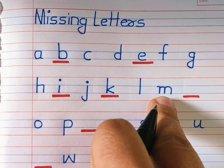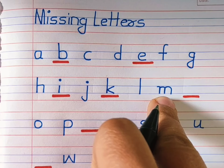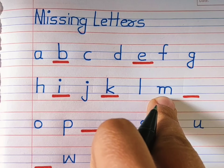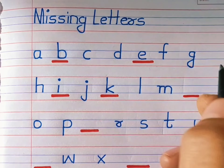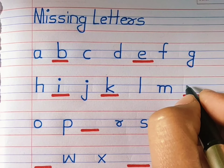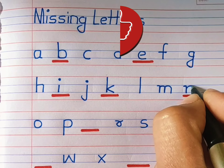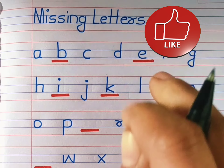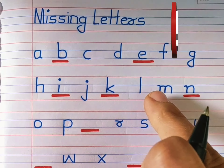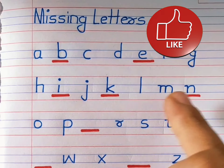Which alphabet is this? M. What comes after M and before O? Yes, small N. L, M, N.